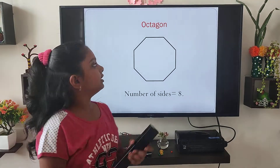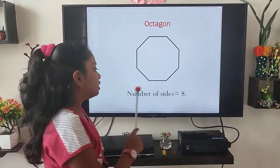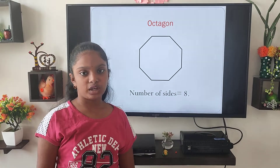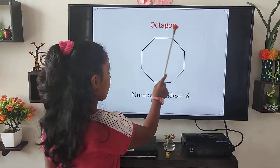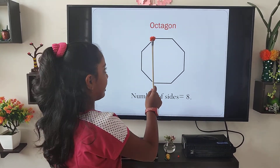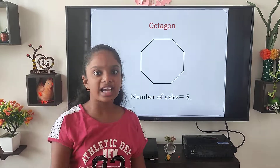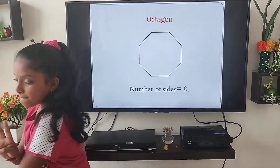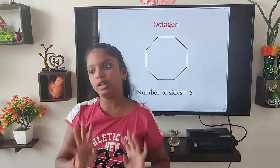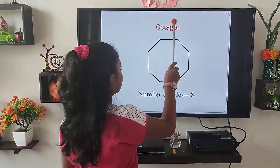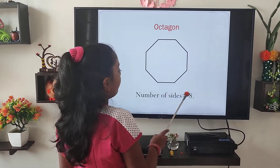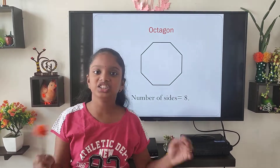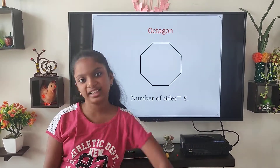Next is octagon. The shape which has eight sides is known as an octagon. O-C-T-A has four letters in it, and four plus four equals eight — so octa plus octa equals eight. The sides are also eight.